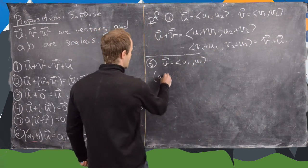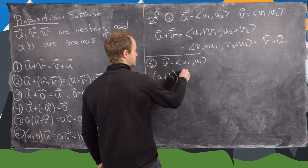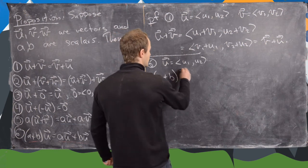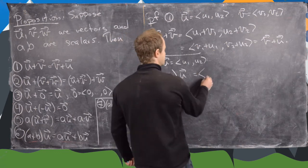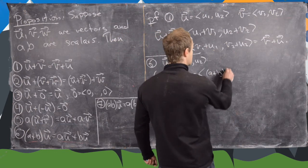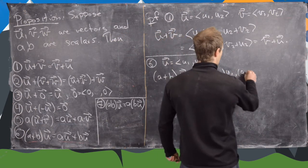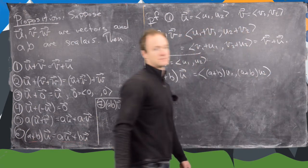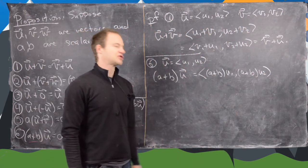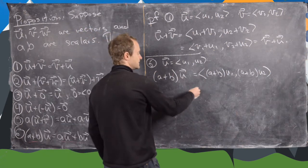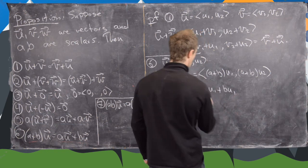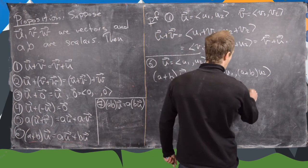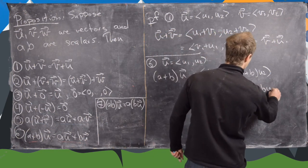And now let's take (a + b) times u. So notice that's going to give us the vector ((a + b)u1, (a + b)u2). But now we know the distributive rule over numbers. So that's going to give us (au1 + bu1, au2 + bu2).